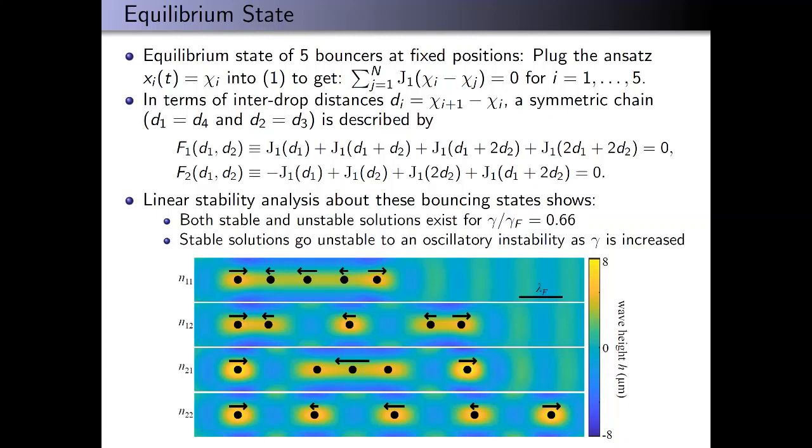When we do a linear stability analysis about the resulting bouncing states, we find that there are both stable and unstable solutions for the lowest gamma considered, 0.66. The stable solutions go unstable to an oscillatory instability as we increase gamma.